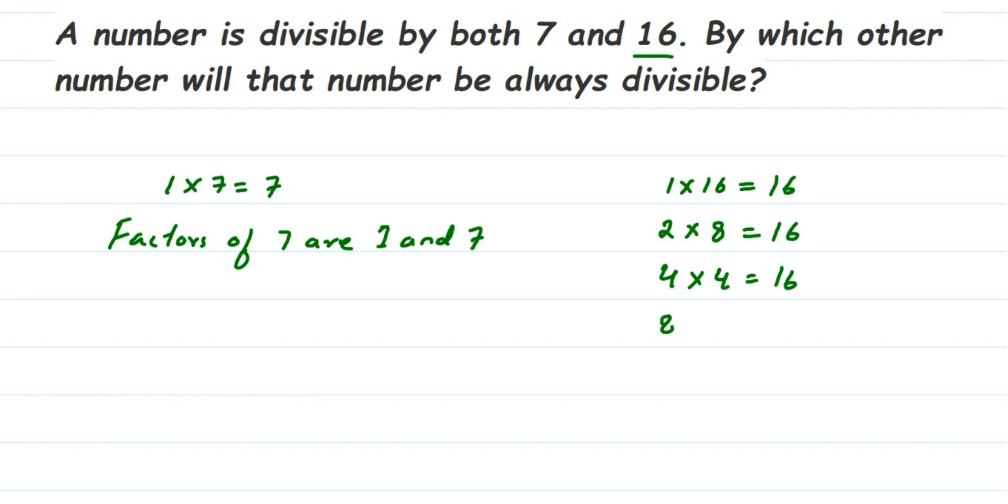16 doesn't go in the 5, 6, or 7 tables. It goes in the 8 table - 8 times 2 is 16. It doesn't go in any other table. Since I have written 1 times 16 is 16, you can stop here. The factors of 16 are 1, 2, 4, 8, and 16.